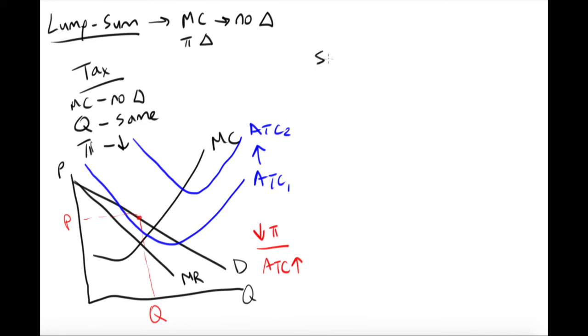The next situation is a subsidy. A subsidy is a way that a government or another organization helps out a producer to make them more profitable.